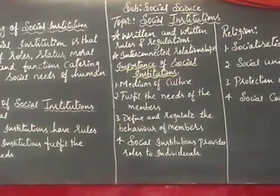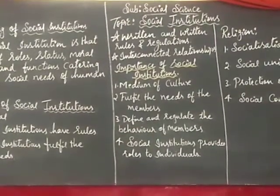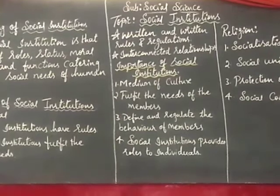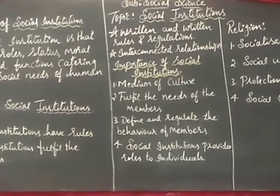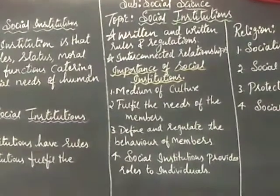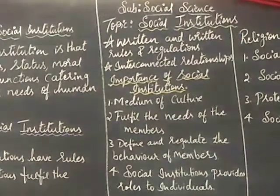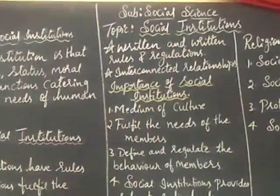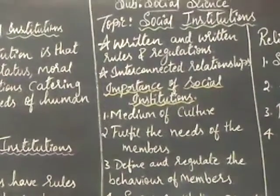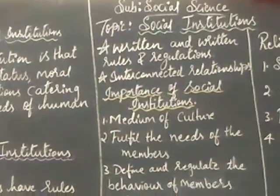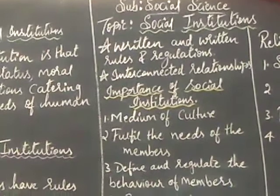Now let us study about the written and unwritten rules and regulations. There are some written documents and unwritten regulations. Custom, tradition, and value systems are unwritten — they are not written down, just followed ancestrally. We follow these customs, traditions, and value systems.